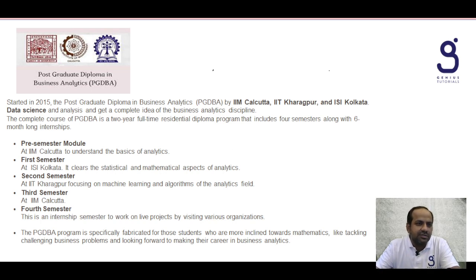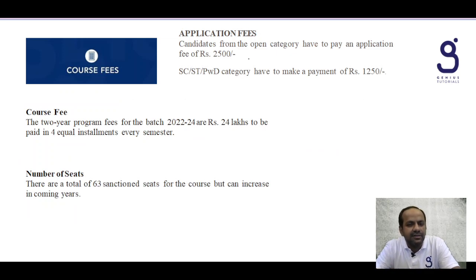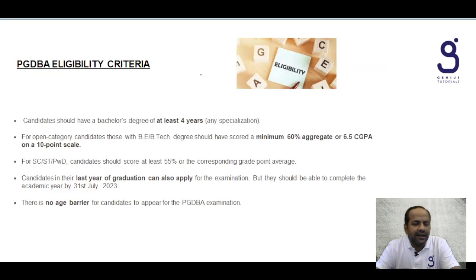Application fees: 2500 is the application fees for open category and for the special categories, schedule caste, schedule tribes, and person with disability it's 1250. Course fees: 24 lakhs, it is a big amount but still it is worth it. Number of seats: 63 sanctioned seats are there and it can increase in coming years.